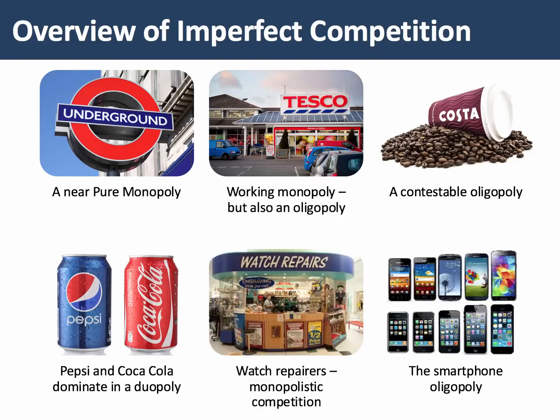Monopolistic competition is typically associated with relatively small firms, many competing against each other — sandwich shops, hairdressing salons, etc. are good examples of that. The smartphone market is a really good example of an oligopoly, but a contestable one: you have dominant firms such as Samsung and Apple, but increasingly emerging companies, particularly from China, providing significant competition. But these are all examples of imperfect competition.